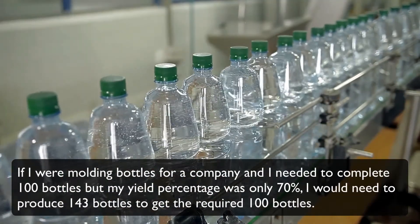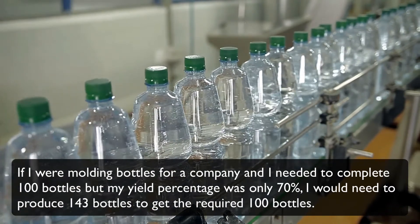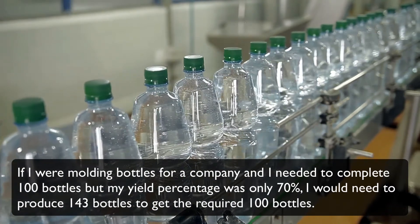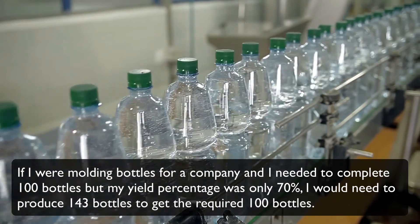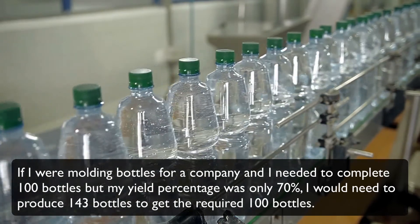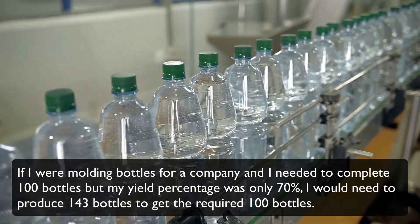If I were molding bottles for a company and I needed to complete 100 bottles, but my yield percentage was only 70%, I would need to produce 143 bottles to get the required 100 bottles. That's right, the system would not correct the actual cause of the defects. It would simply add a scrap factor and produce more to meet the demand.